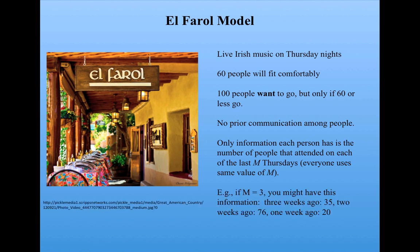For example, if M is 3, you might have the following information: three weeks ago, 35 people attended — a pretty good night. Two weeks ago, however, 76 people attended, and it was awfully crowded and not enjoyable. And then one week ago, 20 people attended — virtually empty. That's the kind of information that each agent has in this problem, and each person on every Thursday night has to independently make a decision: should I go?